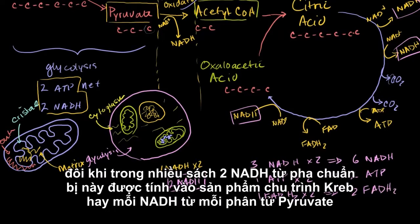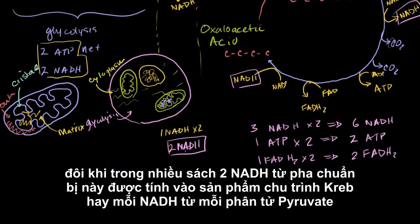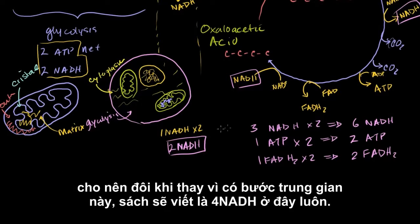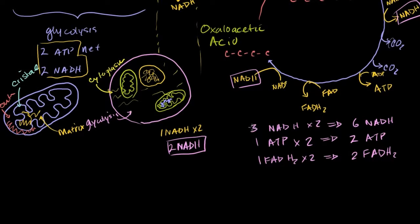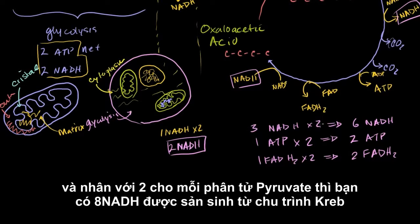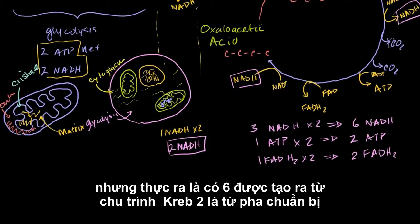Now sometimes in a lot of books, these two NADHs, or per turn of the Krebs cycle, or per pyruvate, this one NADH, they'll give credit to the Krebs cycle for that. So sometimes instead of having this intermediate step, they'll just write four NADHs right here. And you're going to do it twice, once for each pyruvate. So they'll say eight NADHs get produced from the Krebs cycle. But the reality is six from the Krebs cycle, two from the preparatory stage.